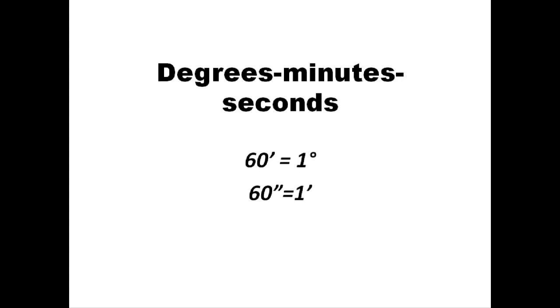Degrees, minutes, and seconds, as their names suggest, relate like the units of time. 60 minutes equals 1 degree, just like 60 minutes equals an hour. And 60 seconds are equal to 1 minute.